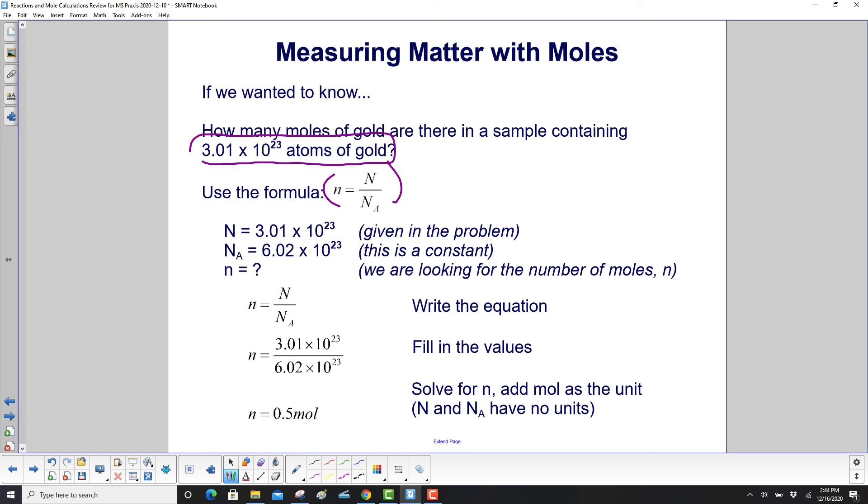And then n, number of moles, little n. We write the equation right from there. We substitute in our values, do the division. And we have n equal to 0.5 mole. And mole is abbreviated mol.